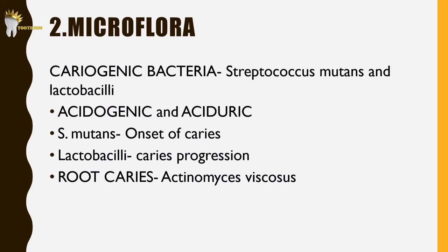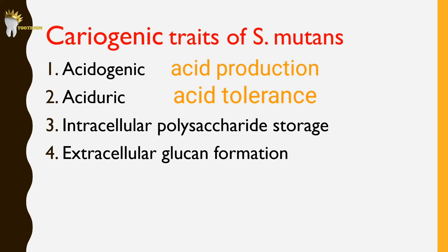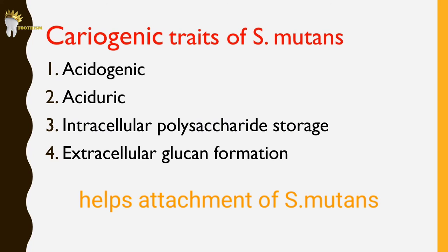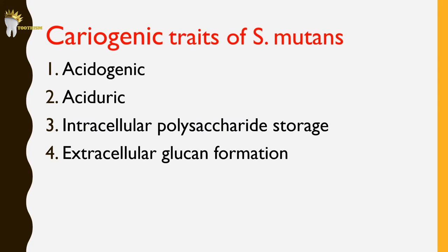In root caries, the organisms involved are predominantly Actinomyces viscosus. Streptococcus mutans is one of 500 species found in dental plaque, but it has specific traits that make it cariogenic: acidogenesis, acid tolerance, intracellular polysaccharide storage, and extracellular glucan formation, which promotes the attachment of S. mutans and increases the pH-lowering ability of the plaque.